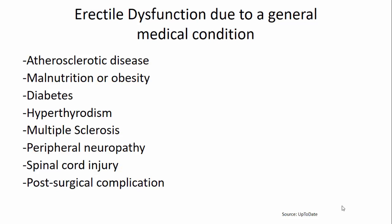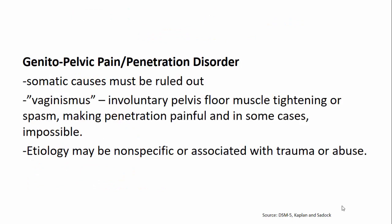Switching gears to another female disorder: genitopelvic pain and penetration disorder, as in our case example. This involves pain or inability to achieve penetration. Somatic causes must be ruled out, so an examination by a gynecologist is warranted. The term vaginismus refers to involuntary pelvic floor muscle tightening or spasm, making penetration very painful or impossible. The etiology could be nonspecific or, in many cases, associated with past trauma or past abuse, so it's important to get that history from patients.